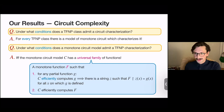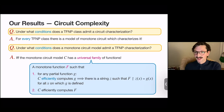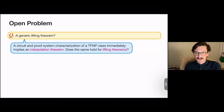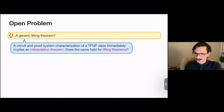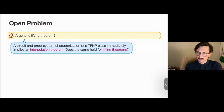To recap: we show that a monotone circuit model admits a TFNP characterization if and only if it has a universal family of functions. Those are our main results — look at the paper for further details. I want to end with one very tantalizing open problem: by establishing both proof and circuit characterizations within a TFNP class, we immediately get an interpolation theorem.